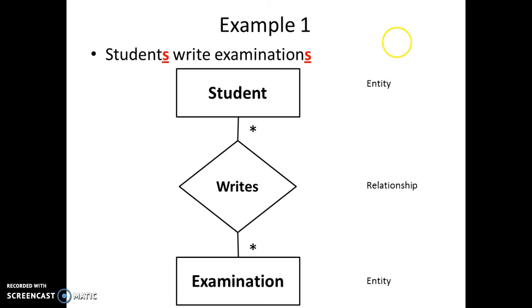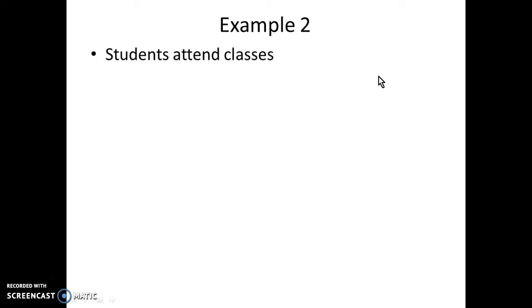An entity from student side is associated with many entities of examination side in the manner of writing that examination. So, this is how the diagram gets modified depending on the statement modification. Now, let us take another simple example. Students attend classes.